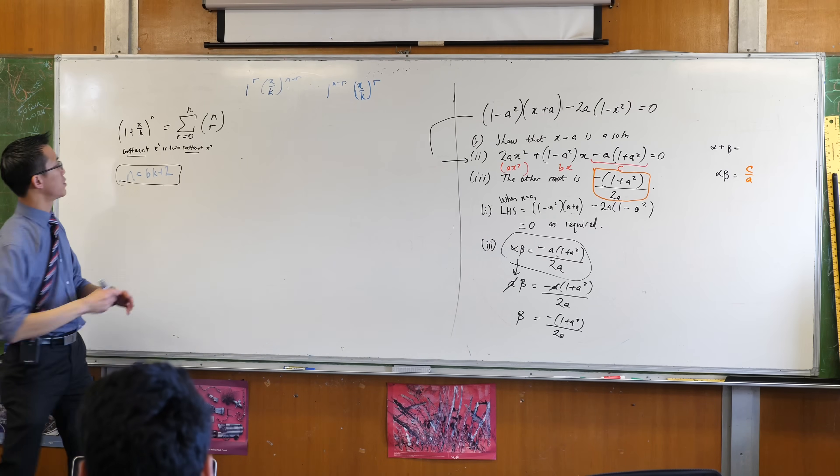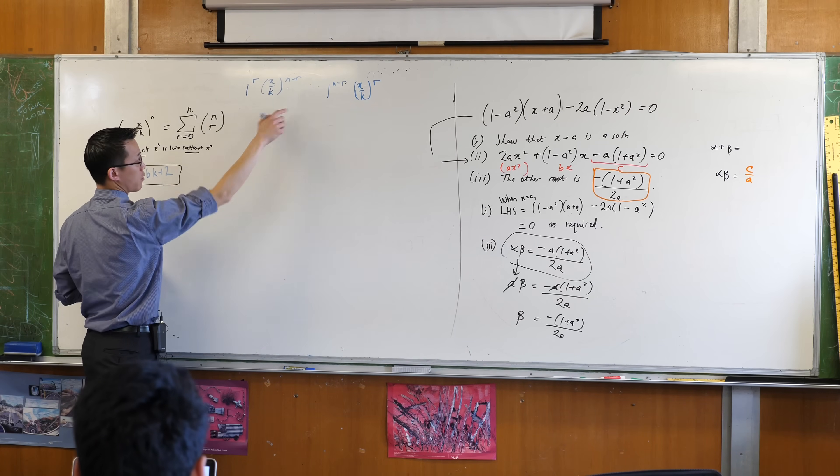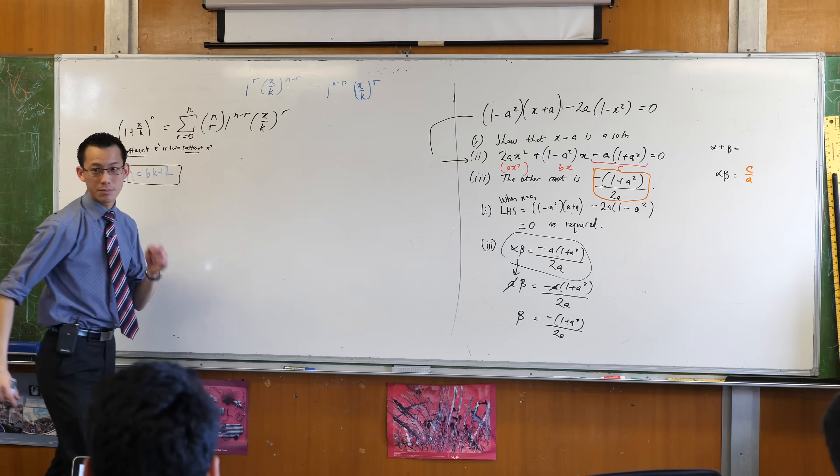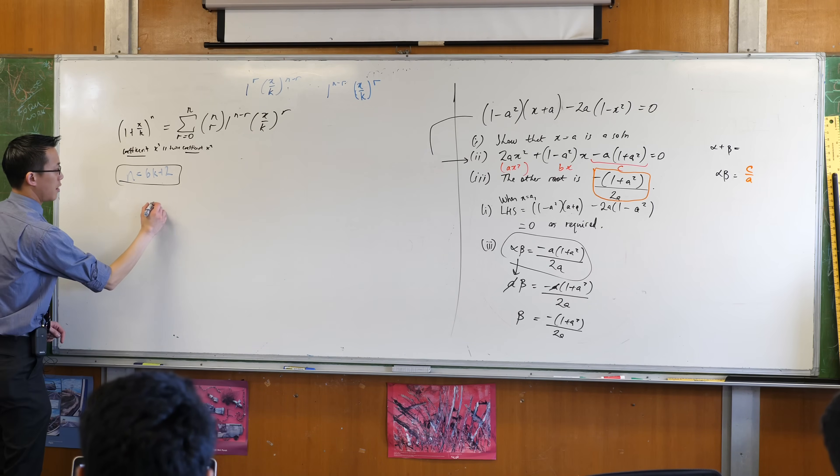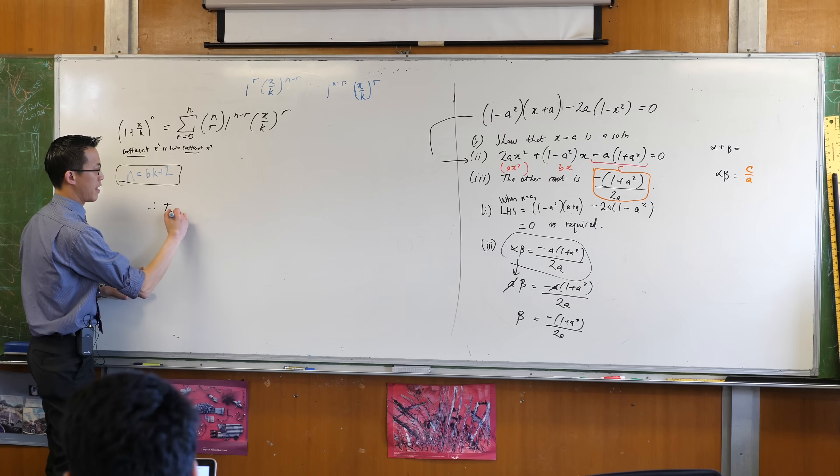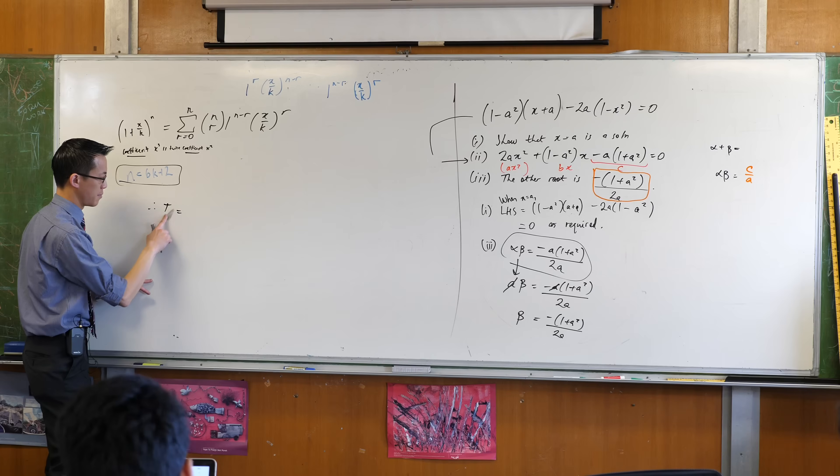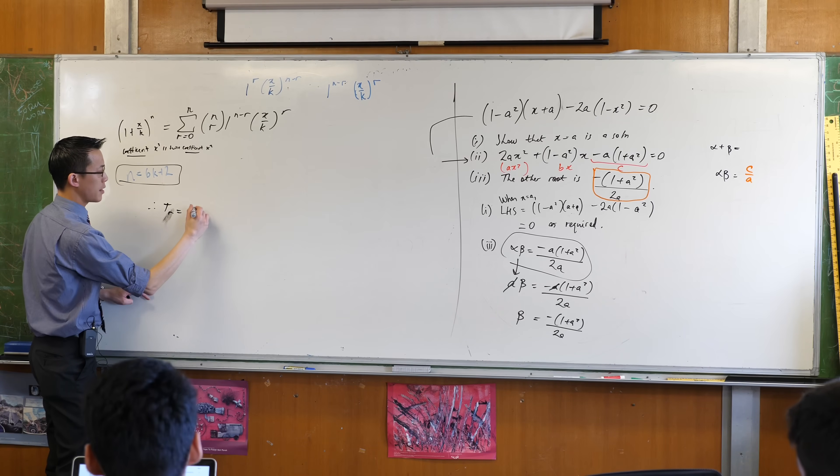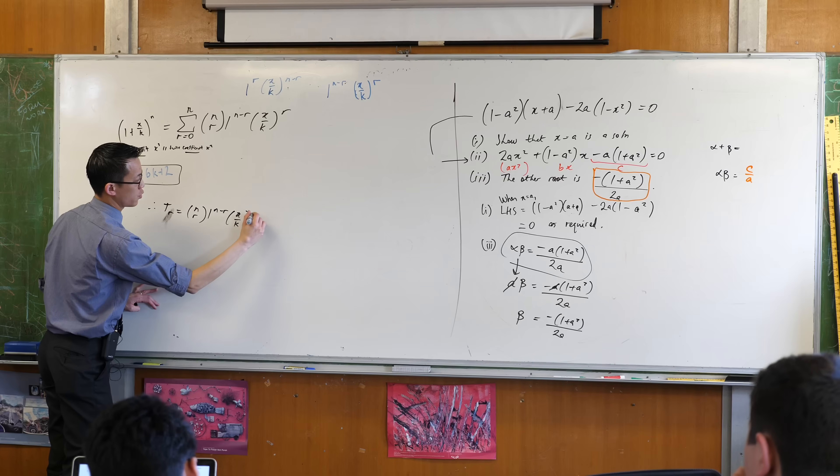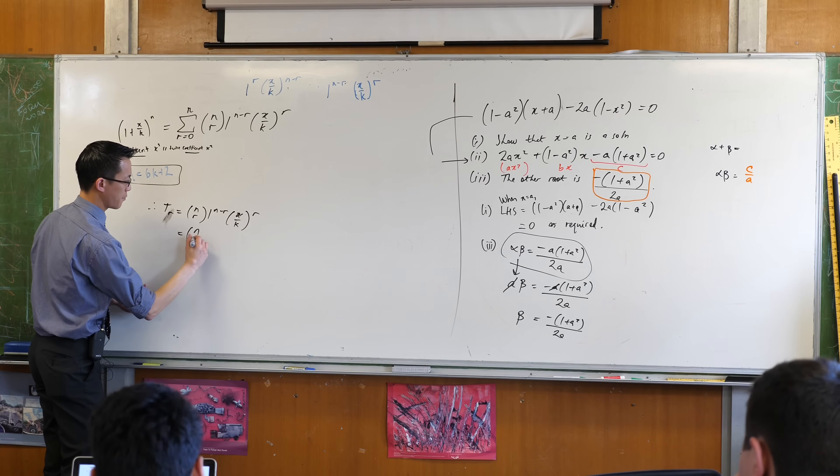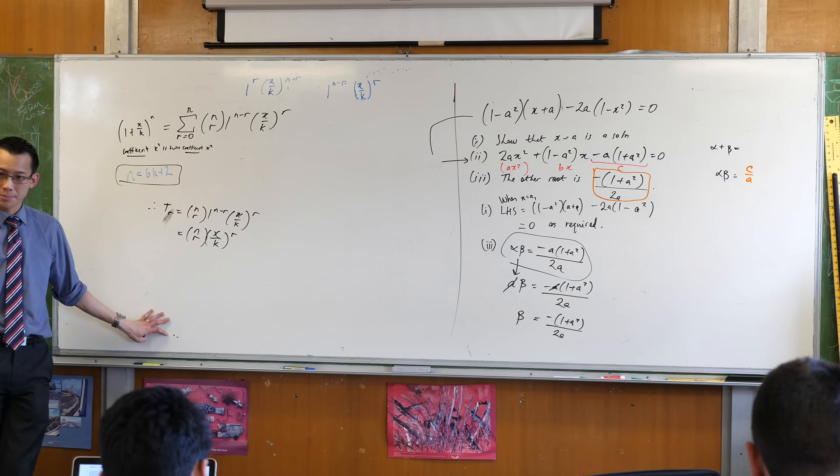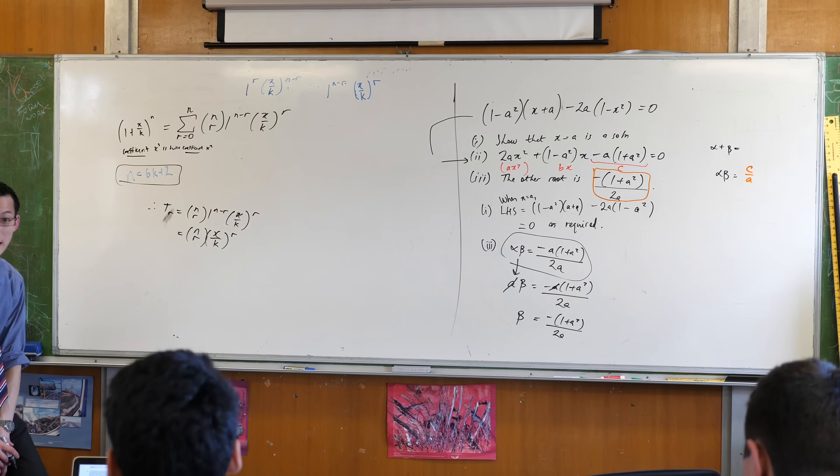Therefore I'm going to write that one, 1 to the N minus R, X on K to the power of R. Therefore the Rth term along is going to be term R is a better way to say it because that's the thing that's changing. It's going to be NCR, I'm just going to write it out like so and then I can simplify like that.